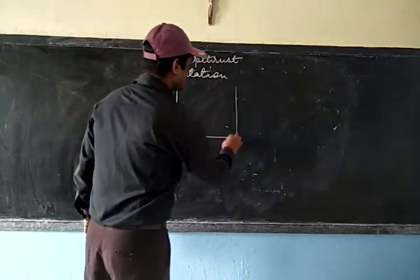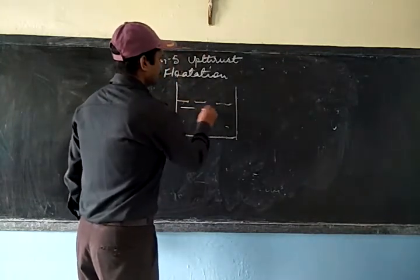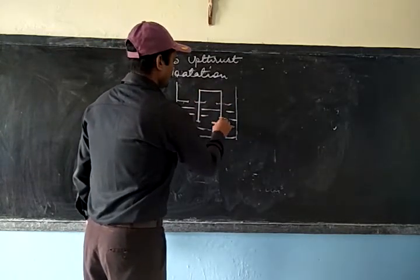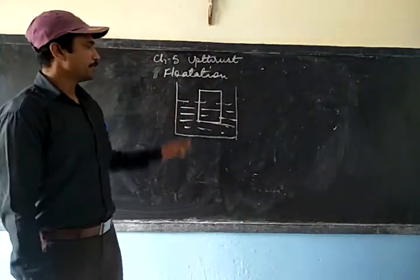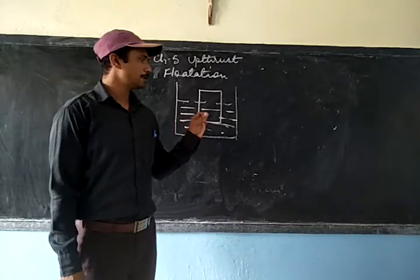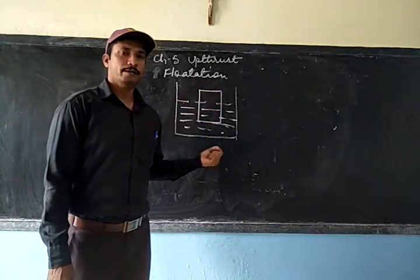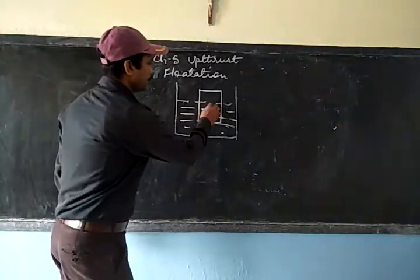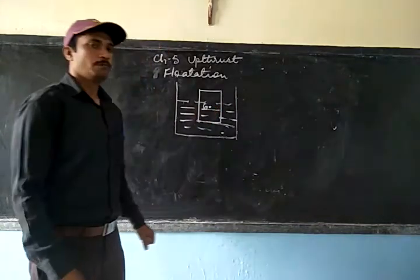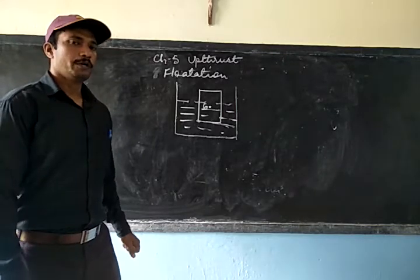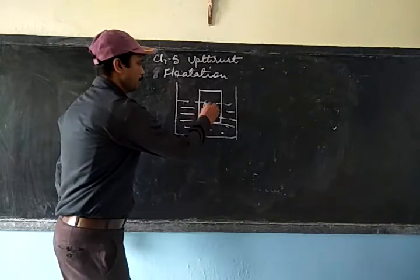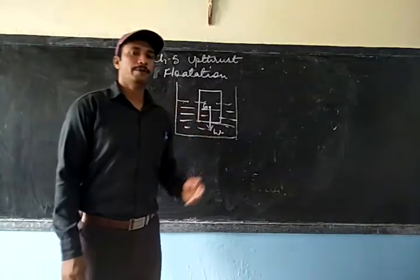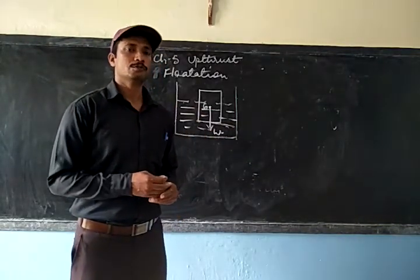Consider a container filled with water with a body floating in it. There are two forces acting on it. One is the force due to the weight of the body, which acts at the center of gravity. The center of gravity is the point where, due to weight, the body remains in the equilibrium state — it is the point where the weight of the body acts.